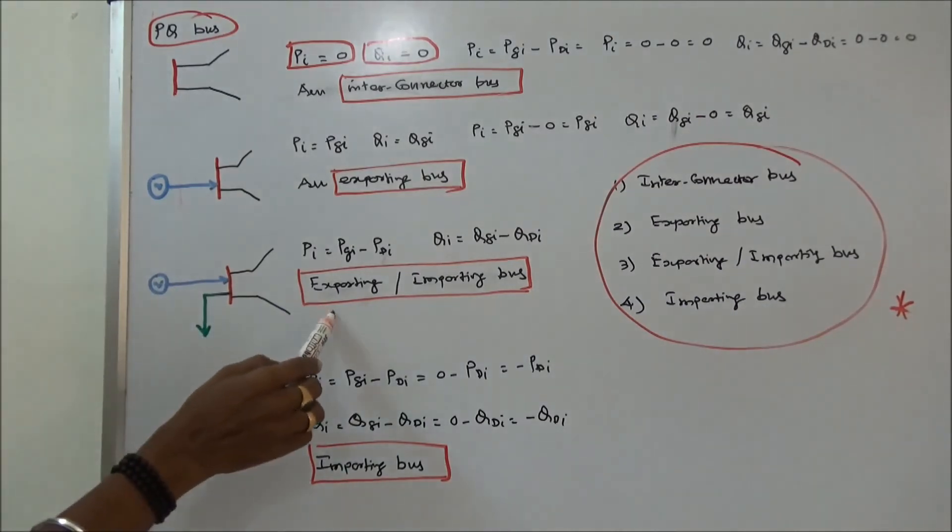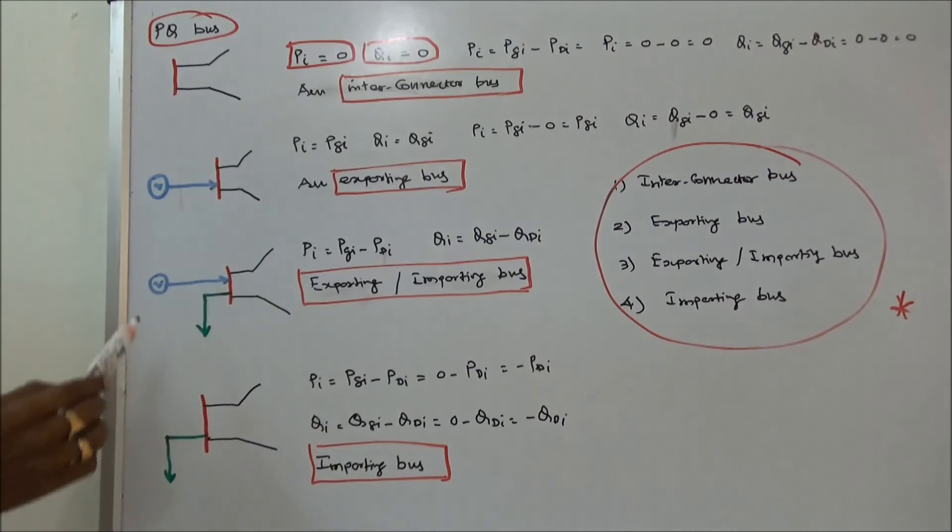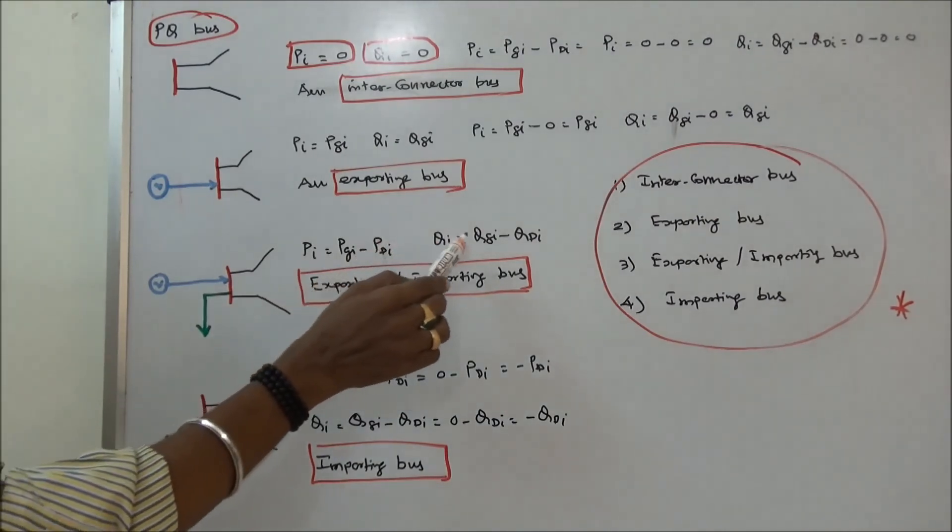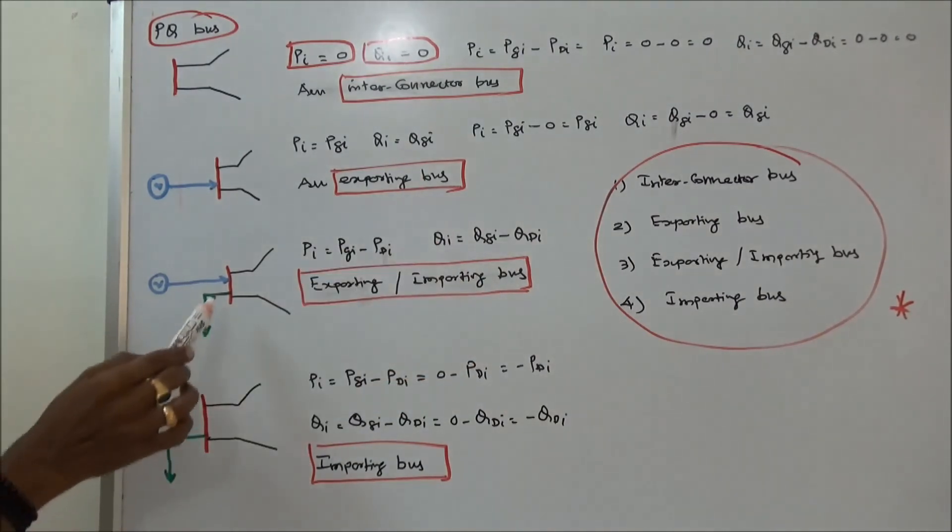The third is exporting or importing bus. We have a generator and we have a load. Therefore PI is equal to PGI minus PDI, QI is equal to QGI minus QDI. This bus is called an exporting or importing bus.